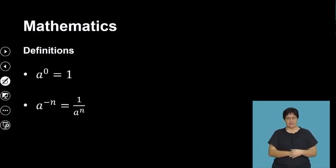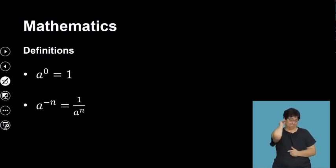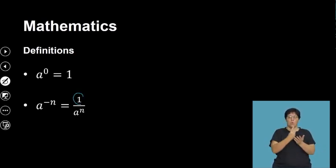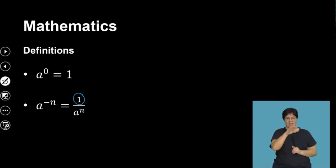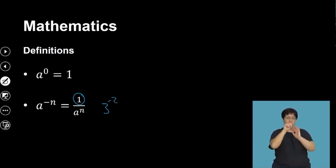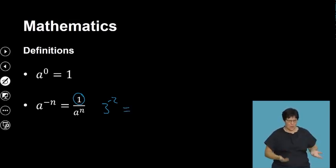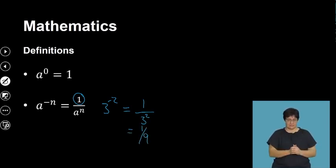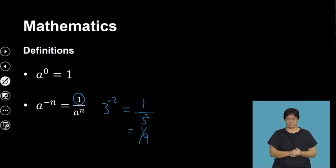The second definition is a to the exponent of negative n. Remember, when you're solving exponents, there is a note we normally make: leave your answers with positive exponents. To do that, you take 1 divided by whatever the term is. So it becomes 1 over a to the exponent of n. For example, 3 raised to negative 2: it's 1 over 3 squared, and 3 squared is 9, so the answer is 1 over 9.